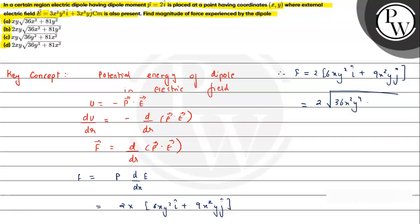2 times square root of (36x²y⁴ + 81x⁴y²). So this is the answer we are getting for this.